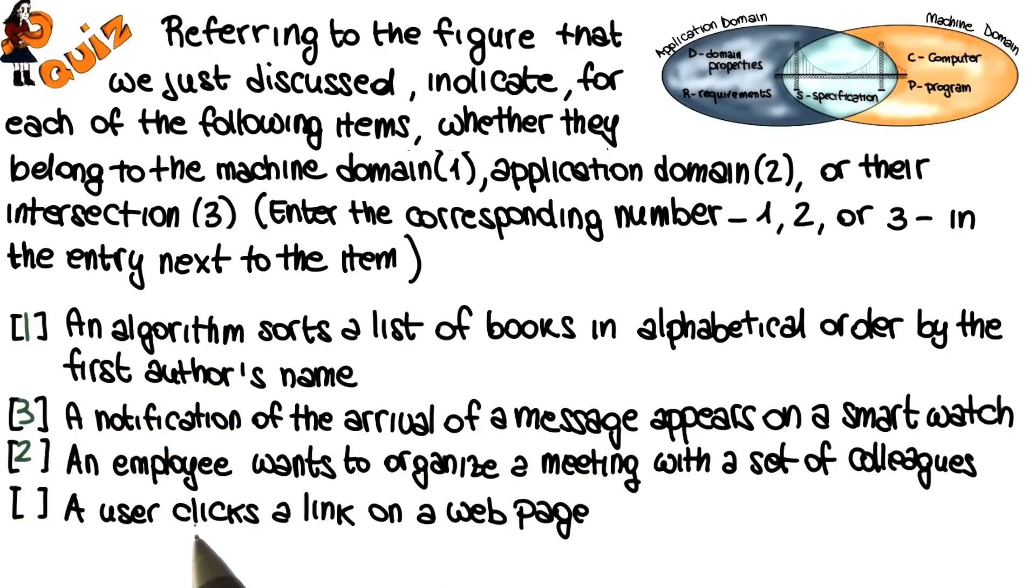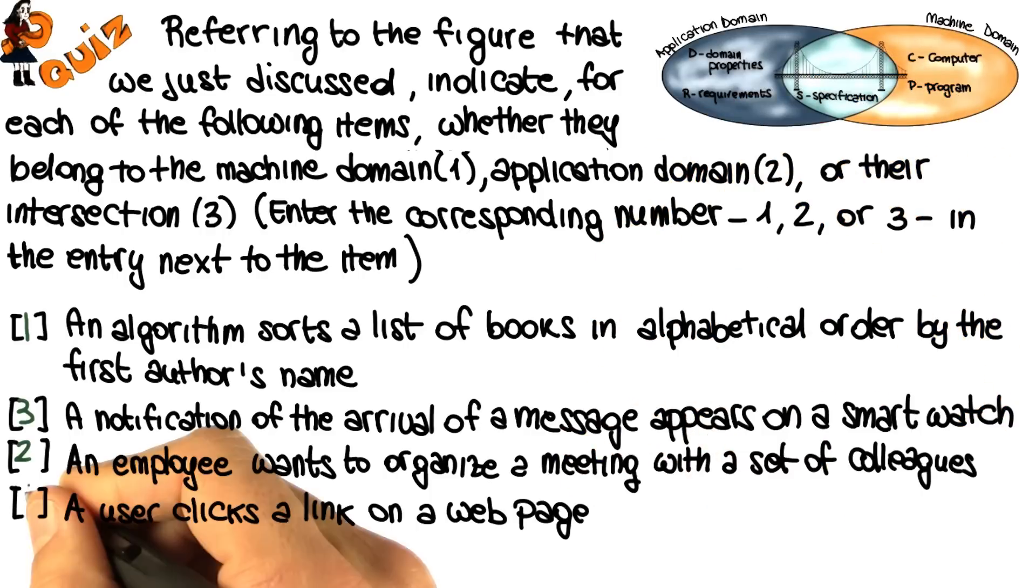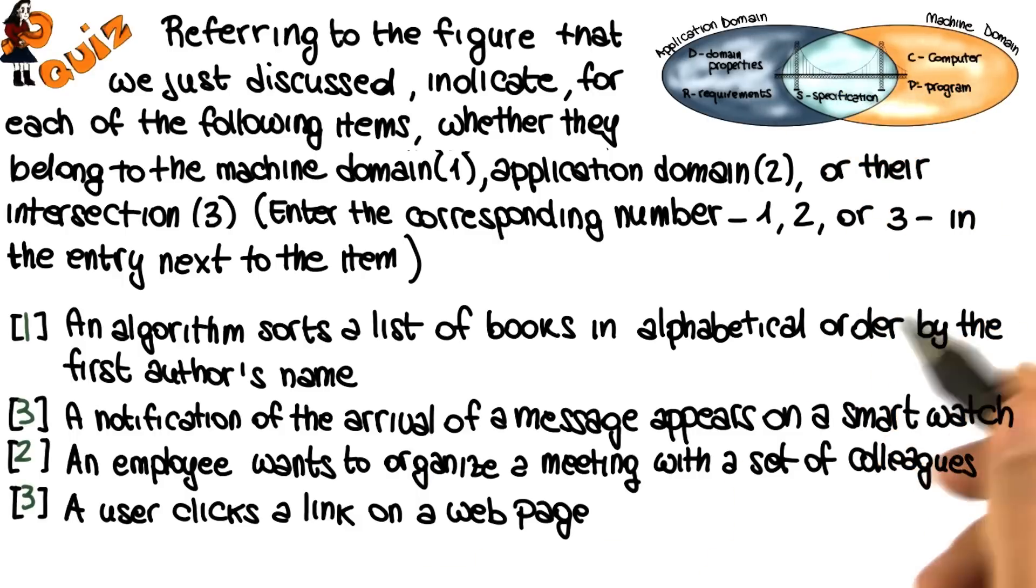Finally, the event of a user clicking on a link on a web page is an event that occurs in the real world but that has an effect also within the machine. Therefore, we're going to mark this as three, something that happens at the intersection between these two domains and, once more, something that could be in a specification.